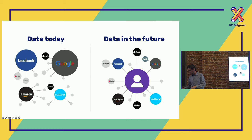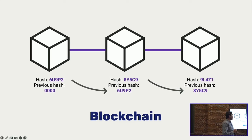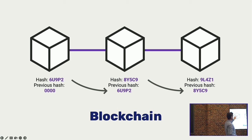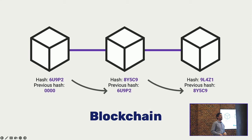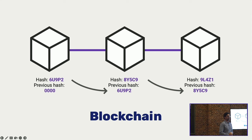We'll start with the first ingredient: the blockchain. You probably know it from Bitcoin and Ethereum. The blockchain is actually a giant ledger on which transactions are kept chronologically in a chain. We have one block, then a new block that refers to the previous one, and so on — one big chain where each new block always refers to the previous block.